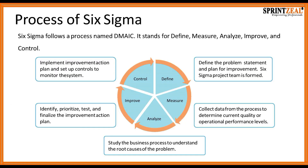Six Sigma follows a process named DMAIC, which stands for Define, Measure, Analyze, Improve, and Control. In the Define phase, we define the problem, create the problem statement, plan for improvement, and form the Six Sigma project team. In Measure, we collect data from the process to determine current quality or operational performance levels. In Analyze, we study the business process to understand the root cause of the problem. In Improve, we identify, prioritize, test, and finalize the improvement action plan. Control is about implementing improvement plans and setting up controls to monitor the system for sustainability.